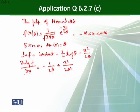And this will give us minus 1 over 2 theta square plus x square over 2 theta square.